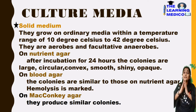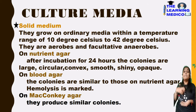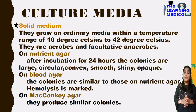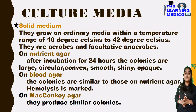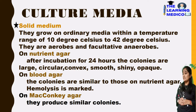On blood agar, colonies are similar to nutrient agar. When blood is added to nutrient agar to make blood agar, hemolysis is marked. On MacConkey agar, similar colonies are formed.